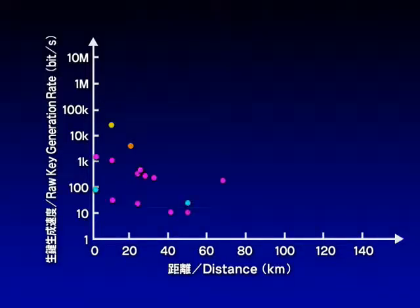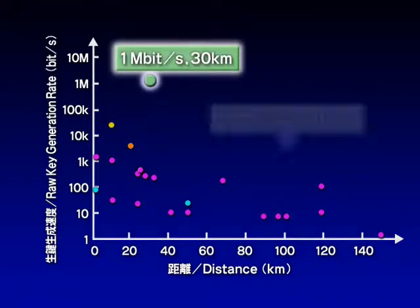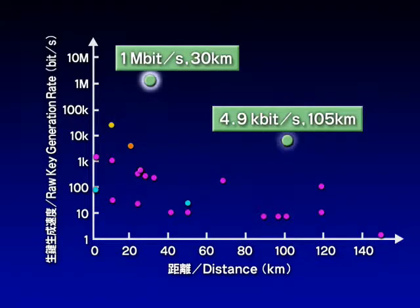Basic Research Laboratories has improved the photon detector and successfully sent secret keys at a rate more than 100 times greater than in the past.